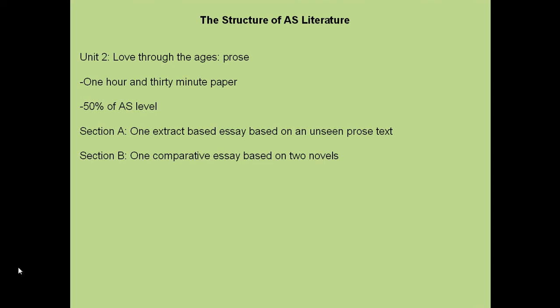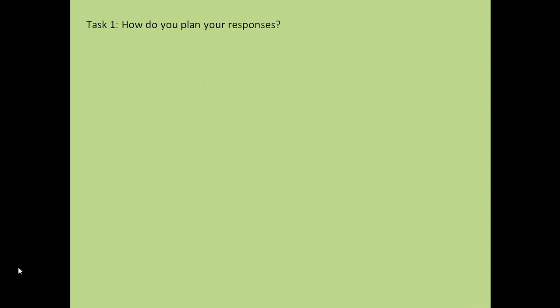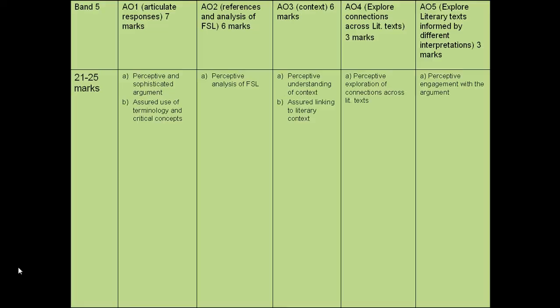Section B, which we're going to concentrate on now, is one comparative essay based on two novels. A couple of questions for you: how do you plan a response in order to achieve four marks, and how do you write the perfect response? Feel free to pause, note down how you would answer, including how you would plan, and then when you're ready press play to resume.